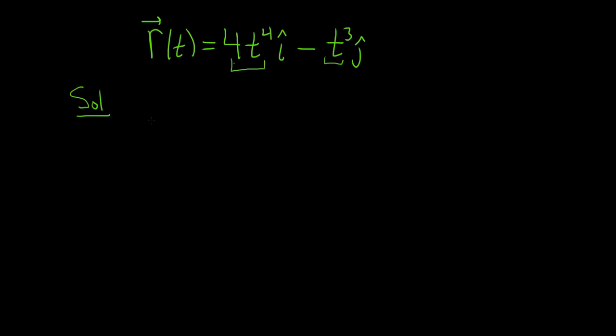So the first thing we do in this problem is we let x be equal to 4t to the fourth, and we let y be equal to negative t cubed. These are our component functions.